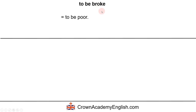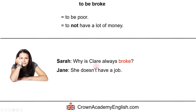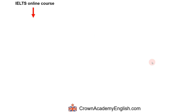And finally, 'to be broke.' This is more formal and again means to be poor, to not have a lot of money. For example, Sarah asks 'Why is Claire always broke?' and Jane replies 'Well, she doesn't have a job.' So 'always broke' means always poor, never having any money.